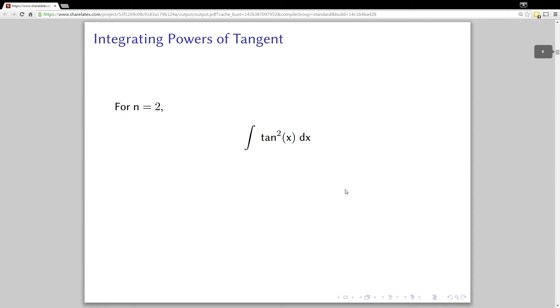The next power is tan squared. For this one, what you want to do is use the Pythagorean identity. Tan squared would be equal to secant squared x minus 1, and now both of those are really simple integrals. The integral of secant squared is tan and the integral of 1 is x. And so that's it for tan squared.